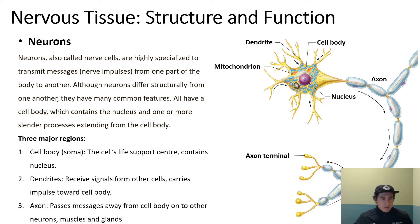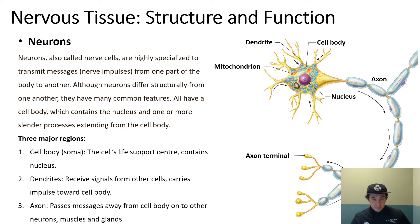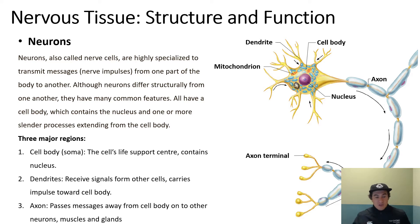To recap: the cell body is the cell's life support center and contains a nucleus. The dendrites receive signals from other cells and carry the impulse toward the cell body. The axon passes messages away from the cell body to another neuron, to your muscles, or to your target organs.